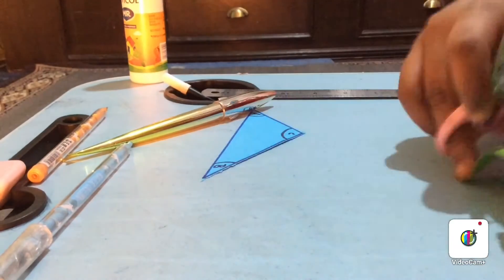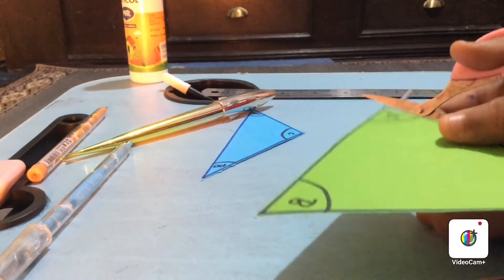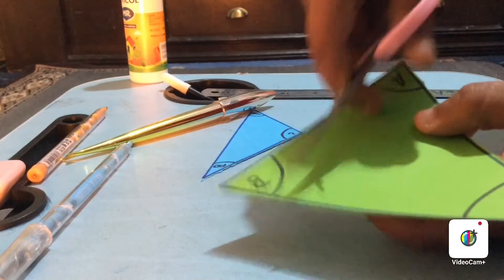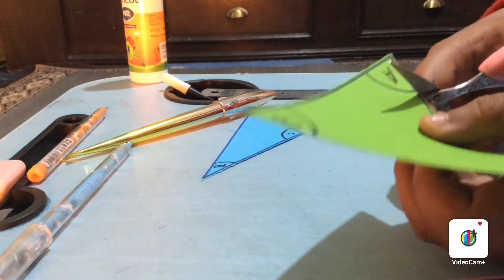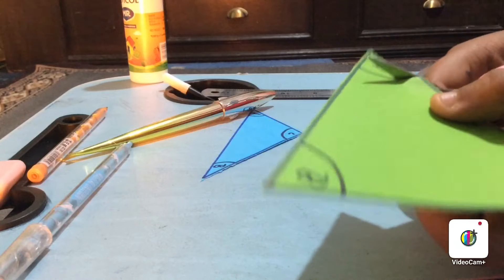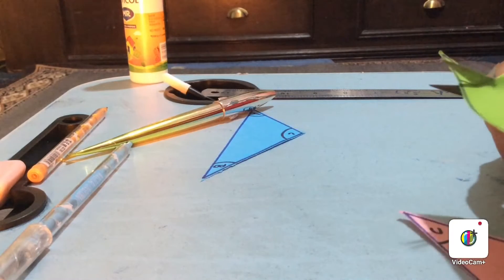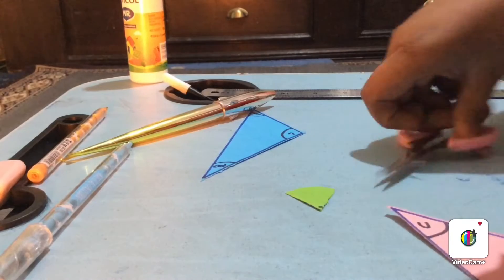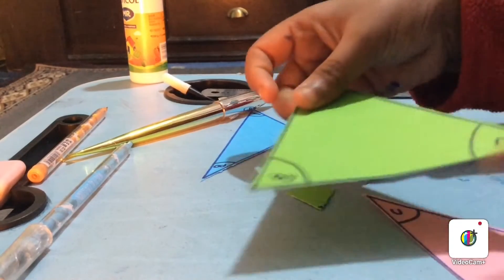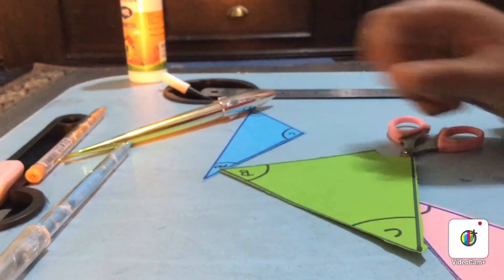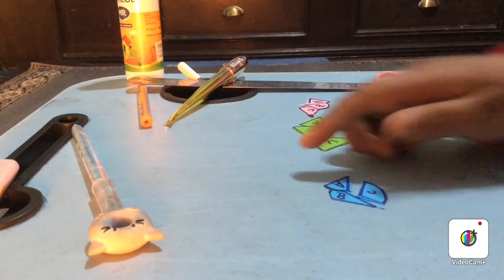And now we need to do the most fun thing. We'll cut the corners in a circular way like this, carefully. In the same way, we'll cut the parts of all of the triangles. Now I have cut all the pieces of corners like this.